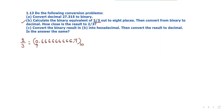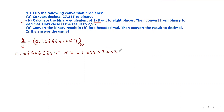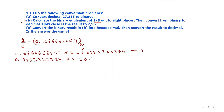Therefore the fractional part is 0.6666. We multiply by 2: 0.6666 × 2 = 1.3333. The integer part is 1, so the first binary digit is 1. We continue the process — for the remaining fractional part 0.3333, multiply by 2 to get 0.6666.